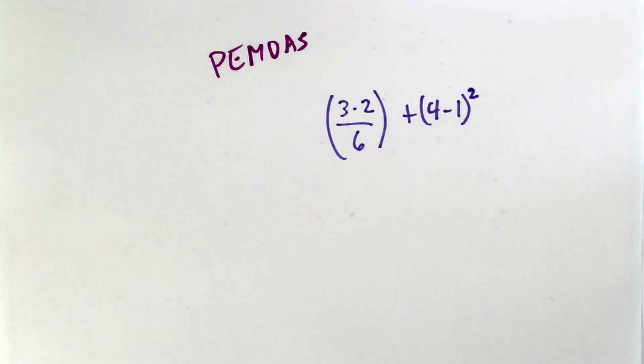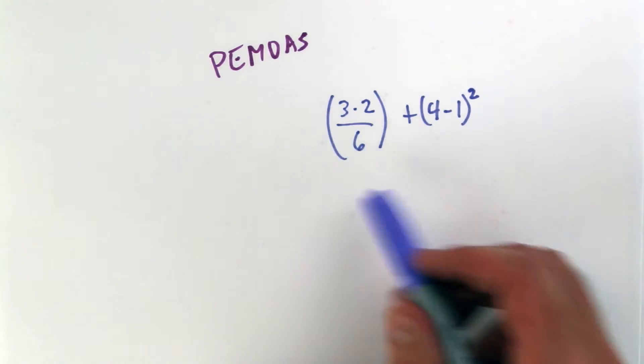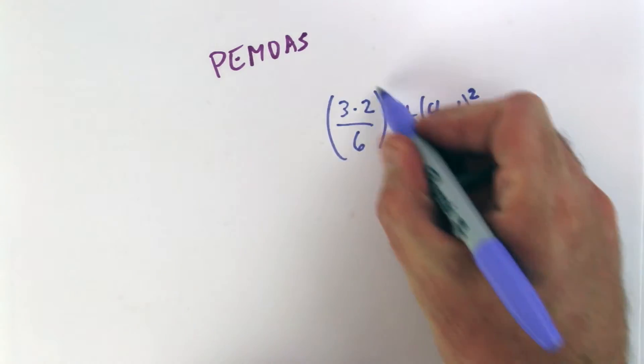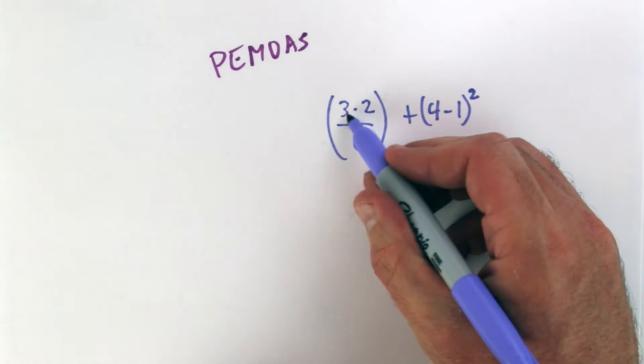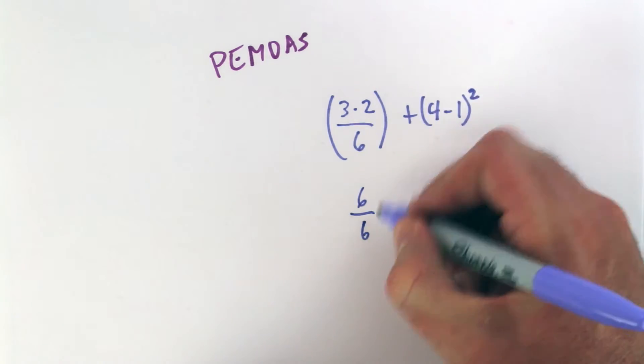PEMDAS doesn't tell us what to do when we have two. Well, you just work left to right. So you work across the problem. So you go to the first set of parentheses that you come to right here. We'll work what's in here. So 3 times 2 is 6. So we do a multiplication before division.